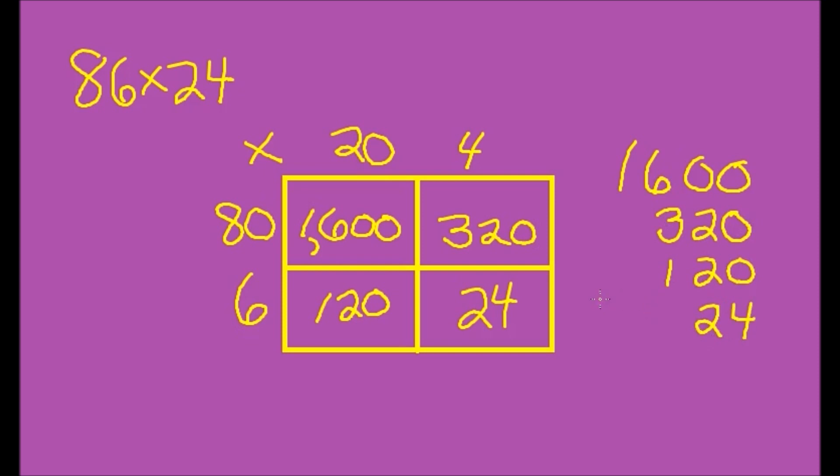So I write them here, add them up. Zero plus zero plus zero plus four is four. Zero plus two plus two plus two is six. I come over here. Six plus three plus one is ten. So I'm going to put the zero here and regroup the one. And then one plus one is two.